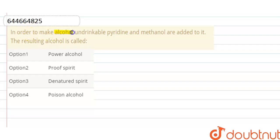In order to make alcohol undrinkable, pyridine and methanol are added to it. The resulting alcohol - proof spirit, denatured spirit, or poison alcohol? So the correct option here is...